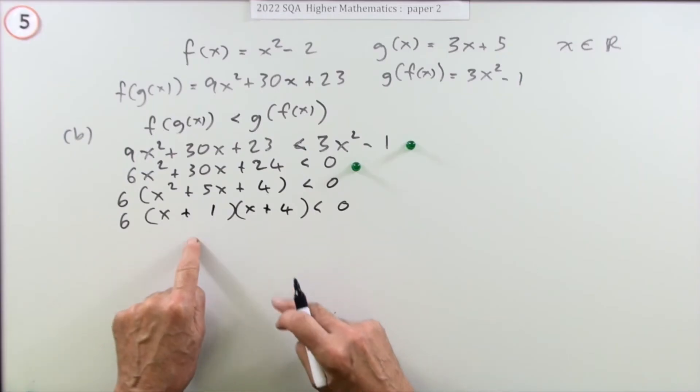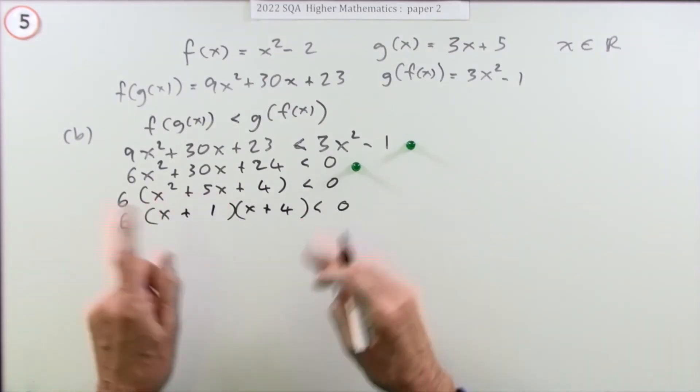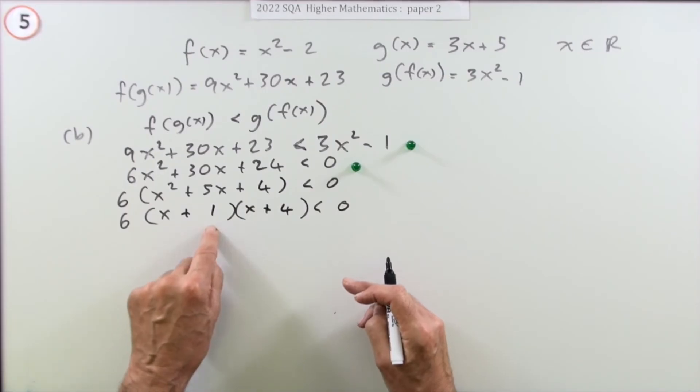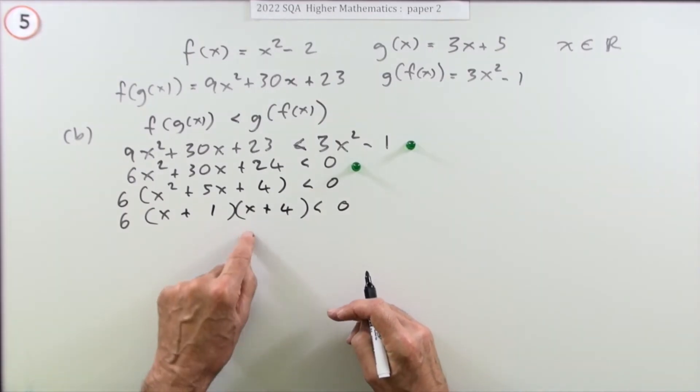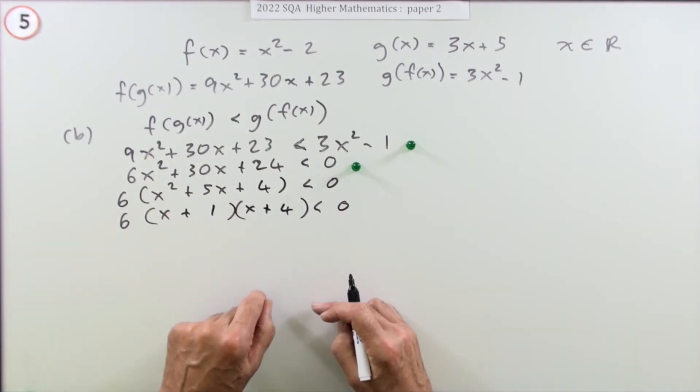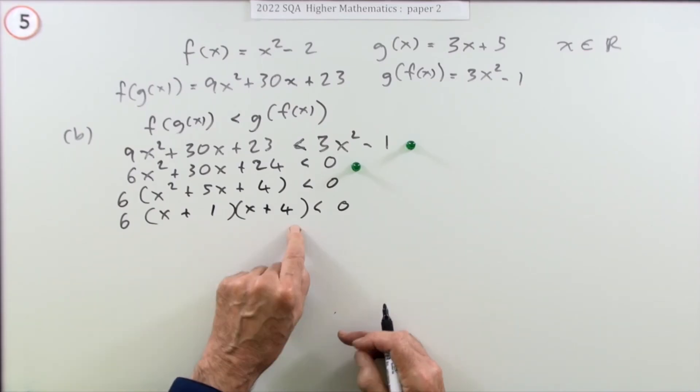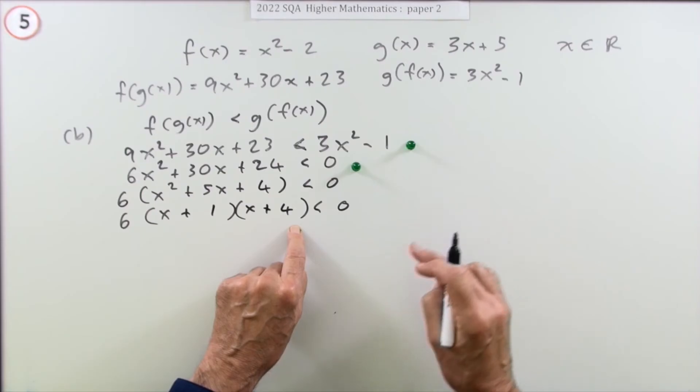The answer isn't x equals negative 1 and x equals negative 4 because that would equal zero, not less than zero. Don't just say x less than negative 1 and x less than negative 4 because that wouldn't work - a negative times a negative makes a positive.